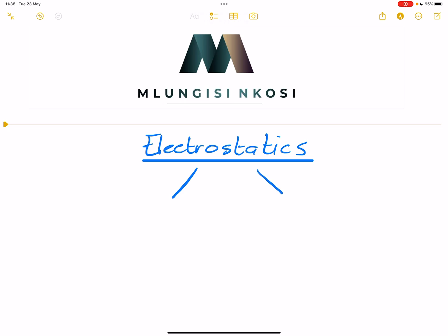Electrostatics comes from a compound word meaning electricity — so we're looking at movement of charge in this case. And statics means that it is stationary, meaning electricity that is not in motion. So there is no motion here.